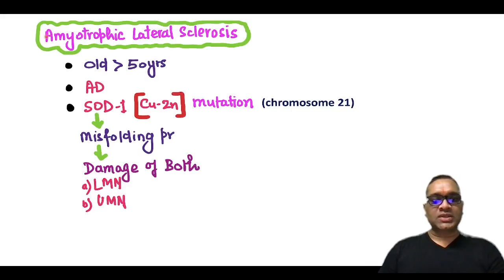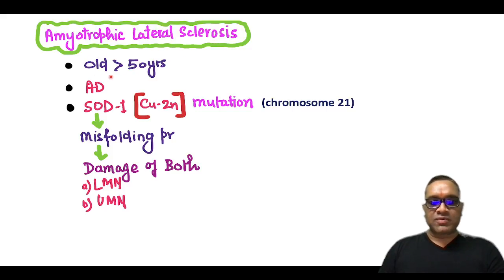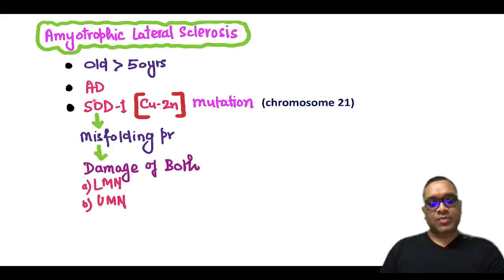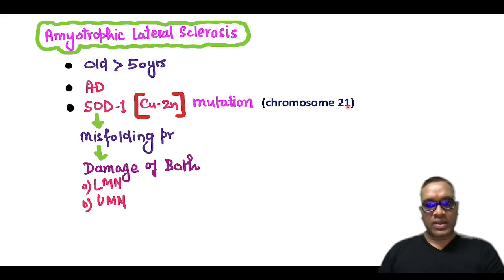Hello everyone. In this high-yielding shot, I am going to tell you about a neurological disorder: amyotrophic lateral sclerosis. Commonly seen in older individuals beyond 50 years of age, the pattern of inheritance is autosomal dominant. The problem is a mutation in the superoxide dismutase 1 gene, which is copper-zinc superoxide dismutase, and this is located on chromosome number 21.